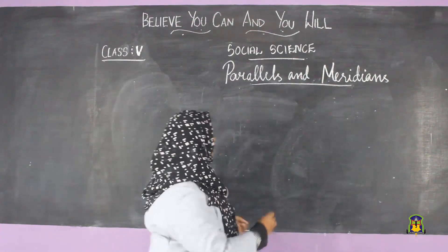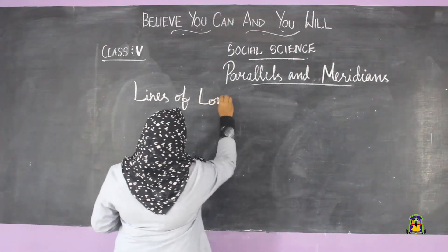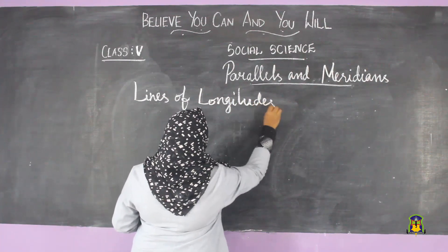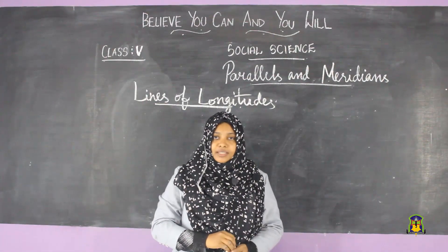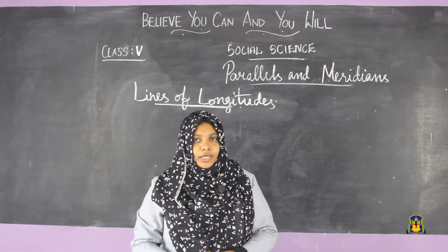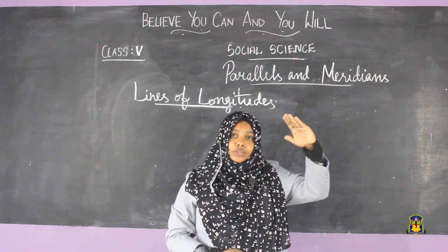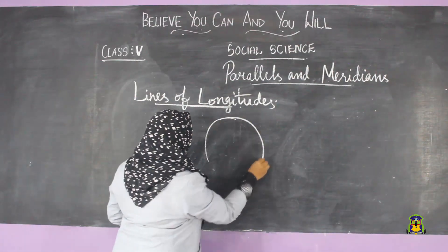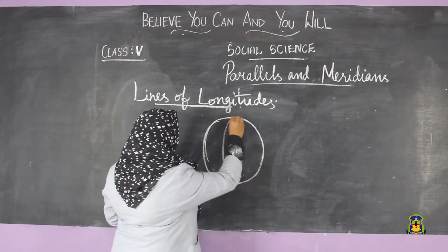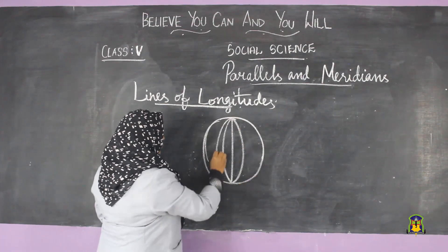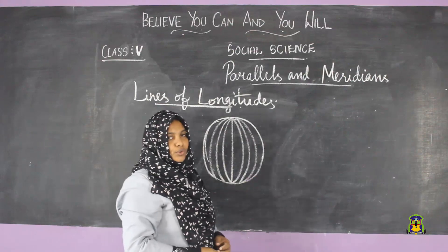Now let's start today's topic: lines of longitudes, also called meridians. What are longitudes? The set of lines that run from north to south on the globe are called longitudes. These are the longitudinal lines.